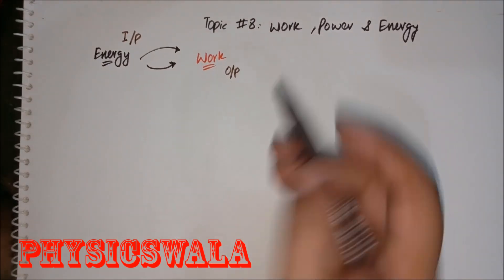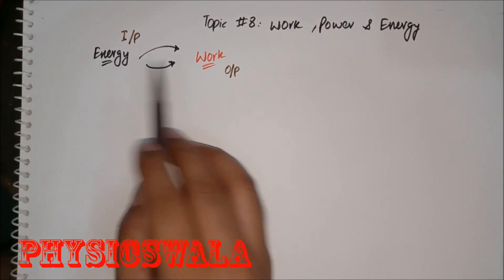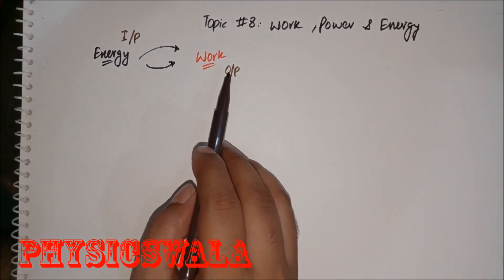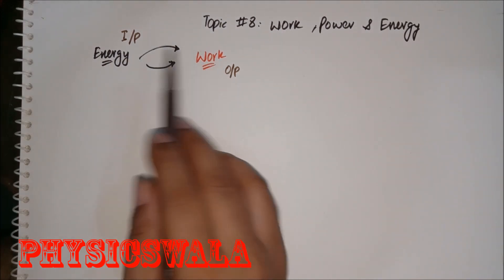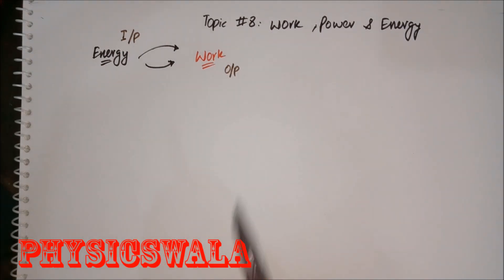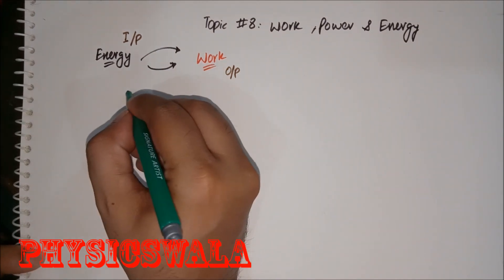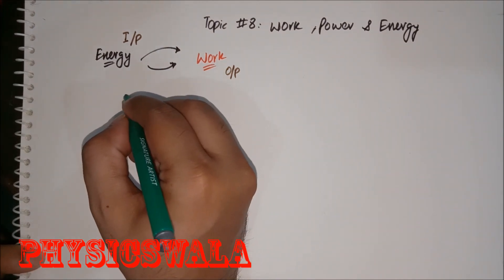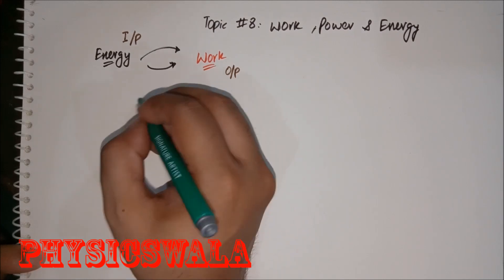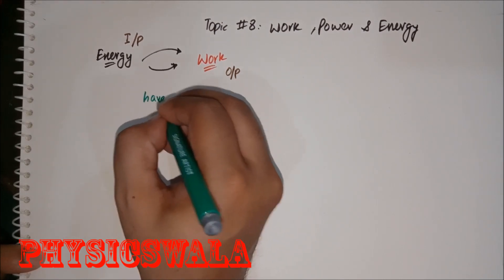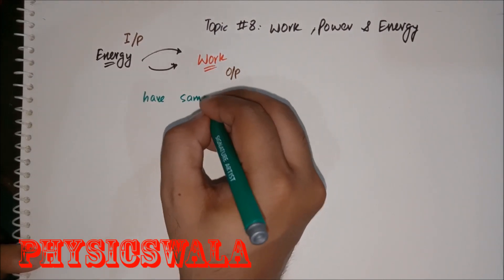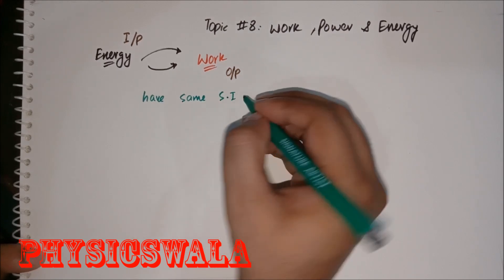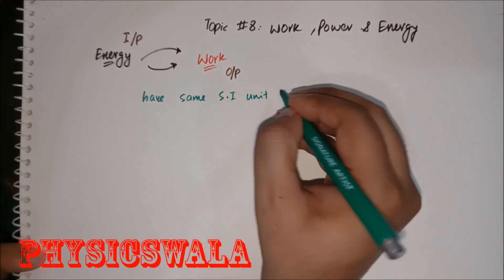Whenever we provide some energy, we get some output. They are kind of the same thing. Why? Because if you look at their SI units, both energy and work have the same SI unit, and what is that SI unit? That SI unit is Joules.